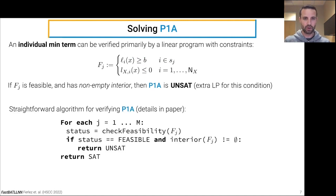So we have the following straightforward algorithm for verifying problem 1A. We just consider each of the selector sets in turn. We construct the associated set of linear constraints, F_j, check to see if it's feasible and whether it has an empty interior. If both are true, then we have witnessed a violation, so we return unsat. But if we examine all of the selector sets without finding a violation, we can return sat.